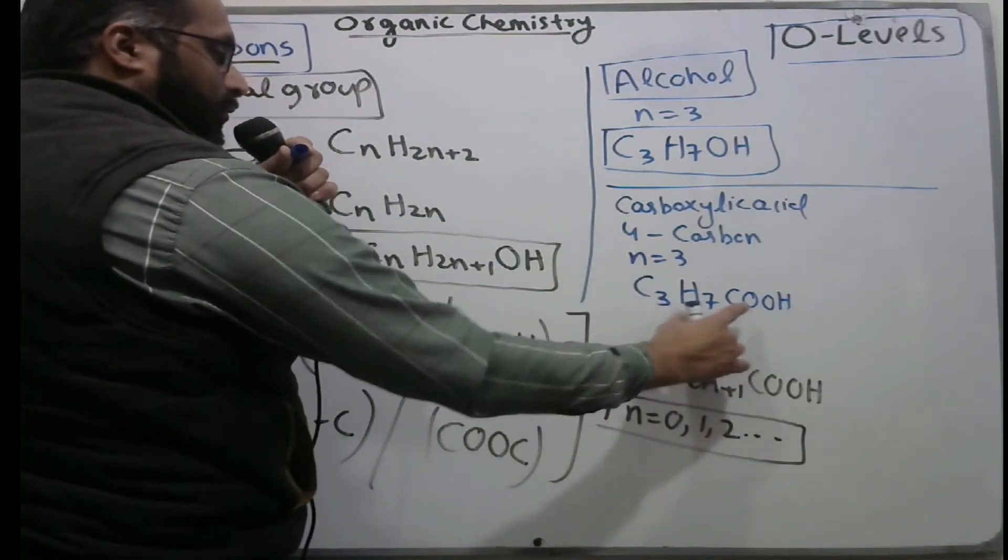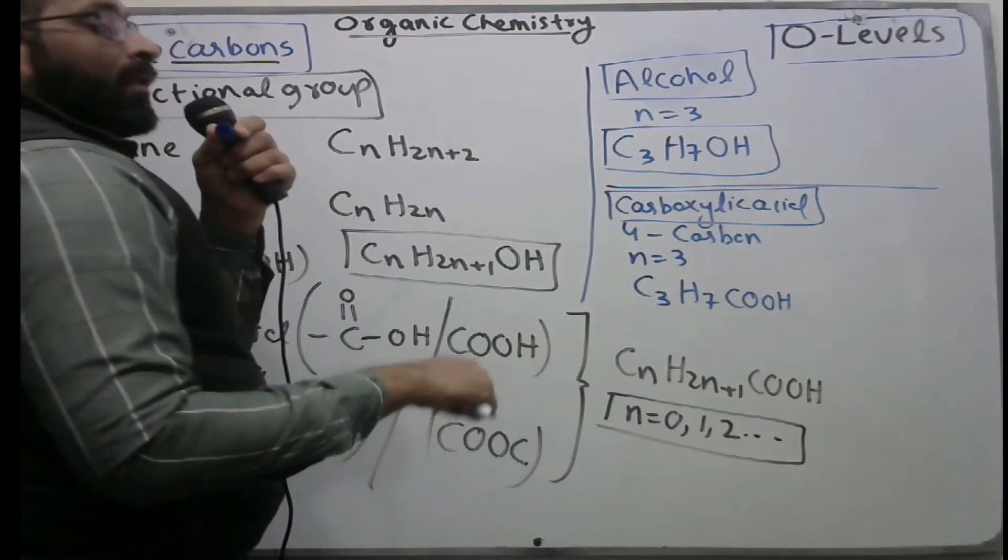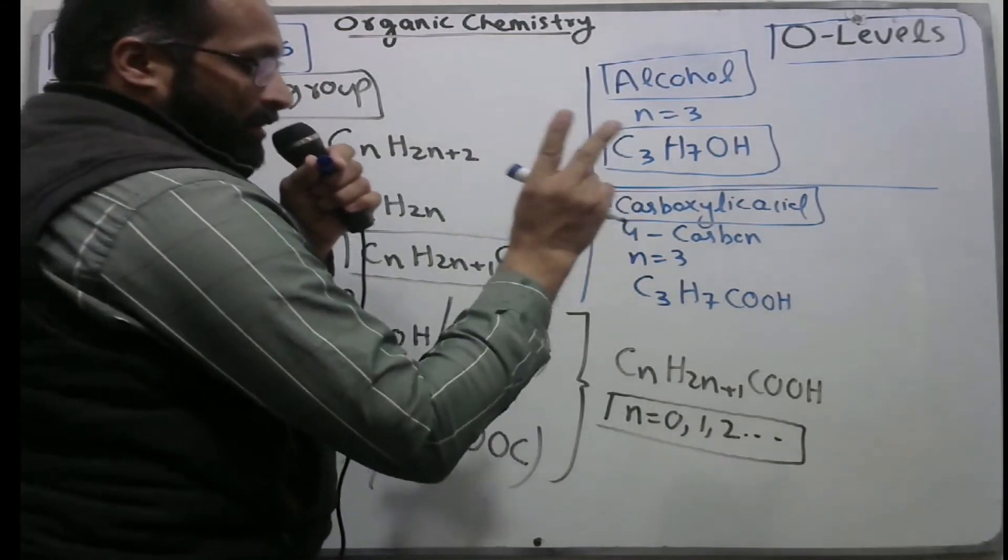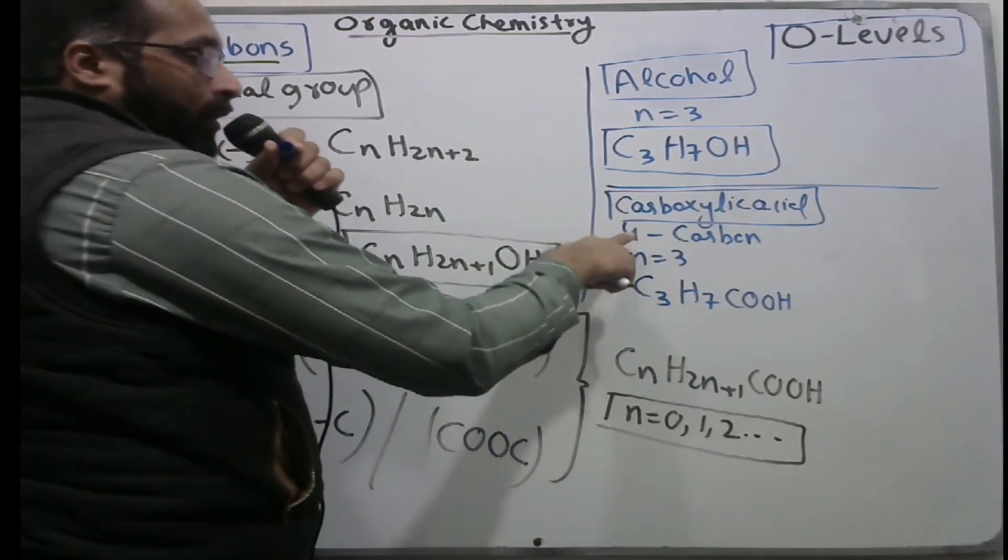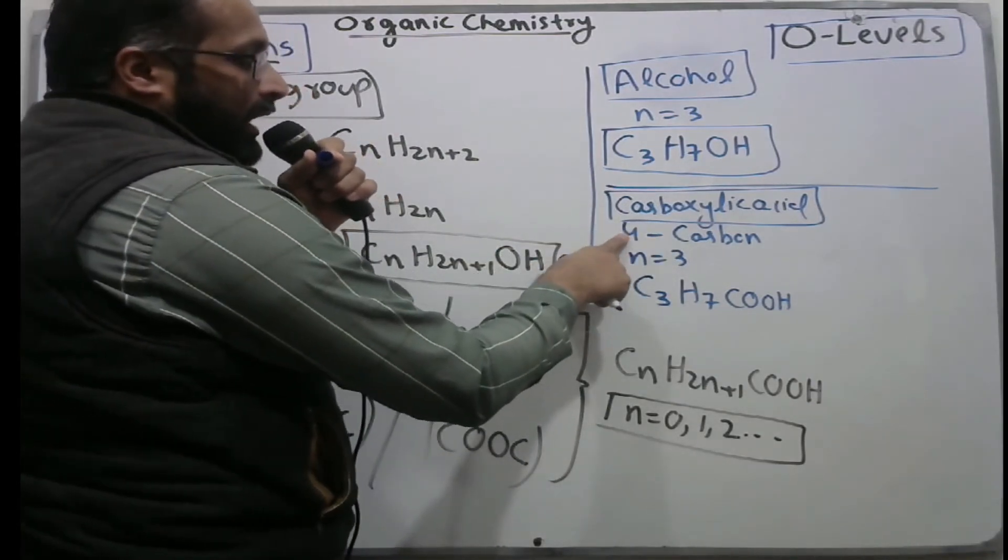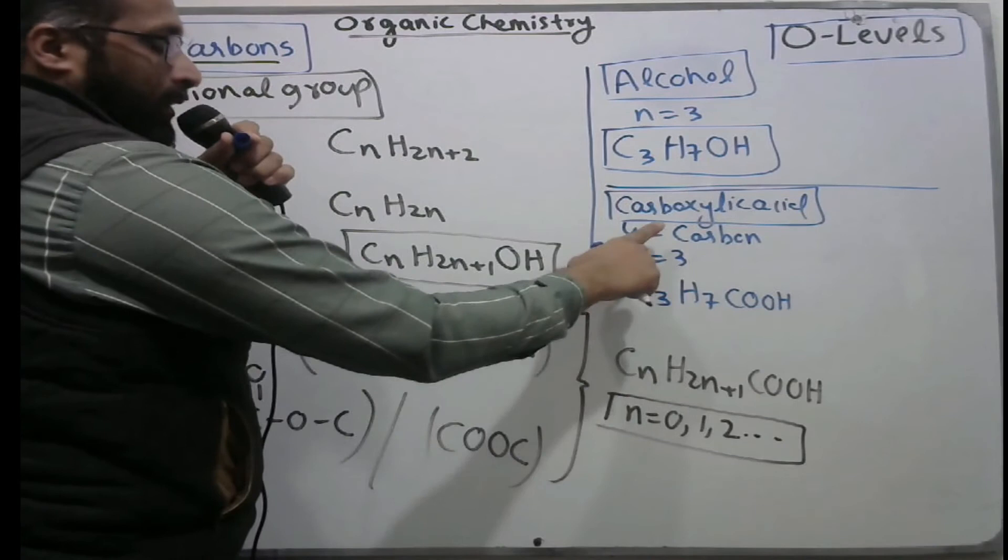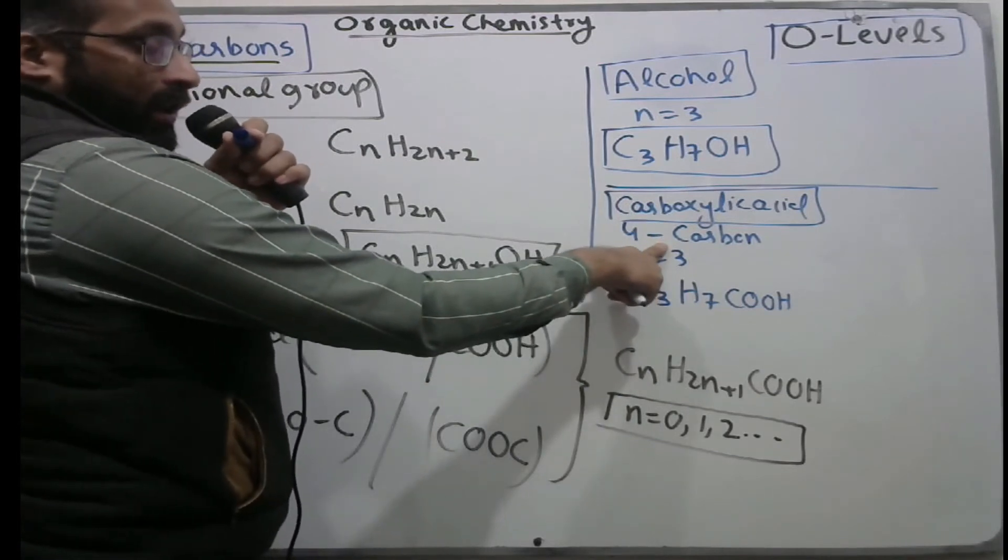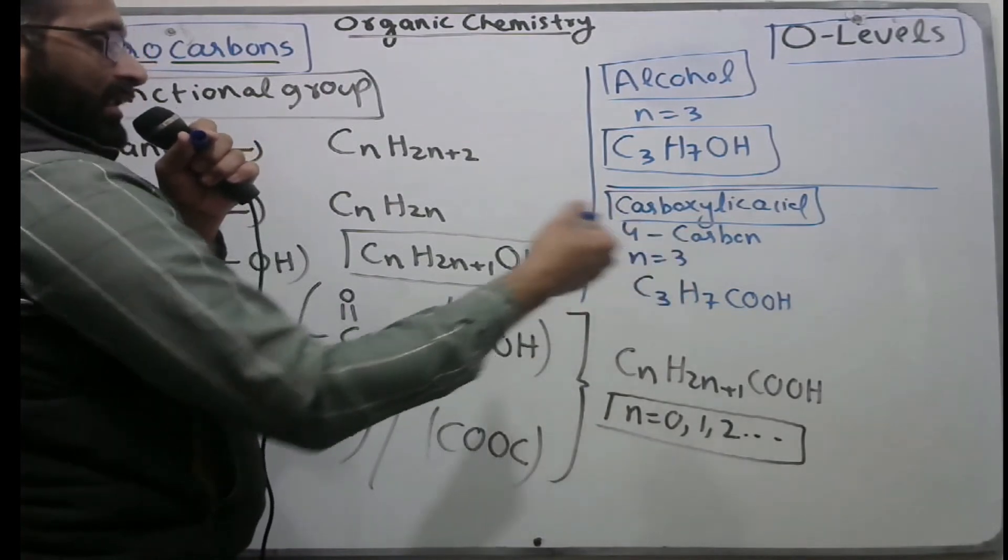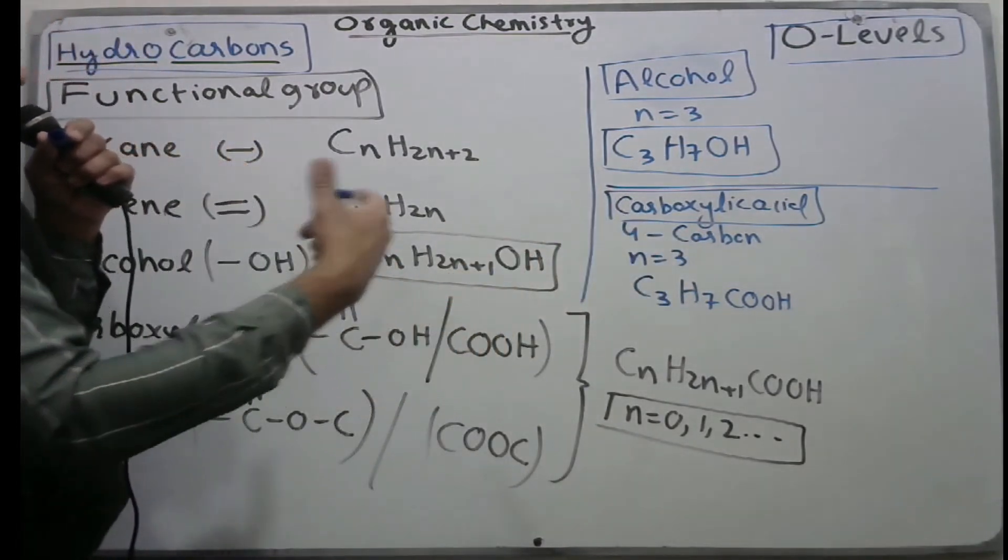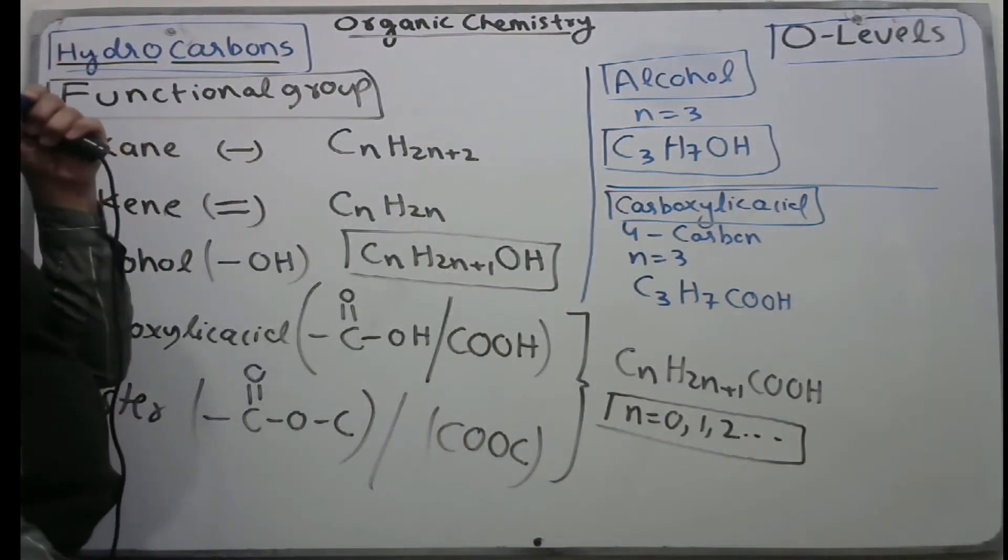For esters, you put the value of n one less than the given carbon. For four carbons, you put n equal to three. For five carbon carboxylic acid or ester, you put n equal to four - one less than the given number of carbon atoms when you put n value.